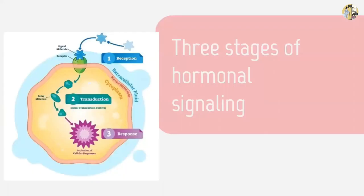These are the three stages of hormone signaling. If you're familiar with basic signal transduction, this is essentially the same thing. First, reception is the process of the signaling molecule — in this case a hormone — binding to an appropriate receptor. Second, transduction is where the signal is relayed and amplified by intracellular enzymes. Third, response is the cellular response that results from the process, for instance increased respiration rates.